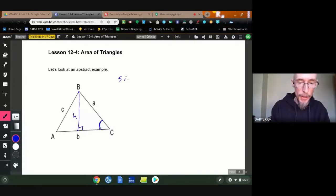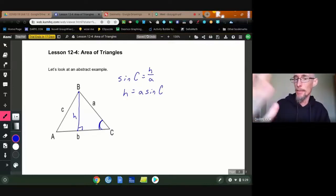Because I can find my height using one of those angles. So the sine of angle C is the opposite, which is the height, over the hypotenuse, which is side A. And if I cross multiply, I get the height is side A times the sine of C. Ah, now I know my height. I can get my area.